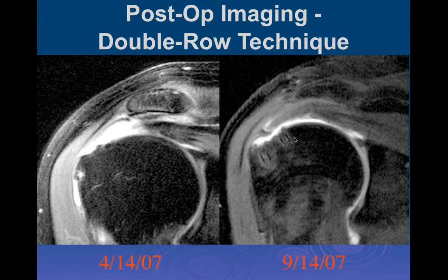In practice, you do with what you've got. If you have room for one anchor, you put in one; two anchors, you put in two. Single row, double row—it doesn't make any difference as long as you do a secure repair with raw bone against raw tendon. In surgery you can't always plan the exact configuration, and cortical bone is scanty—if you put in one anchor and don't have room for another, you better not try.